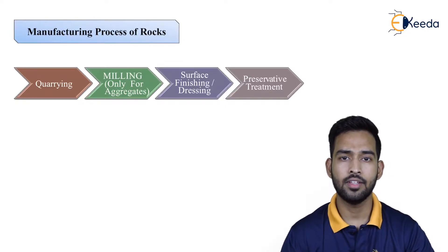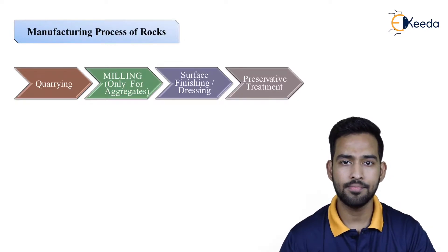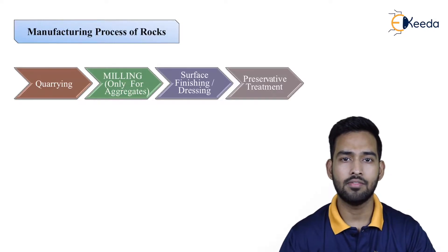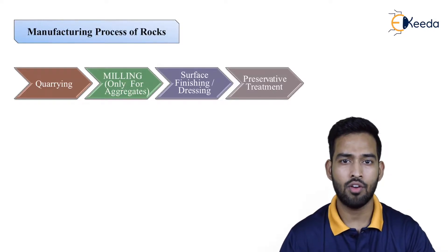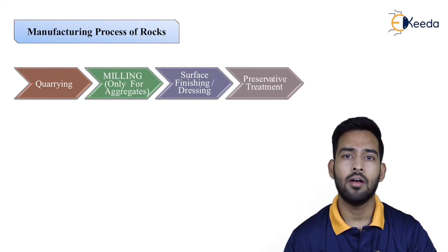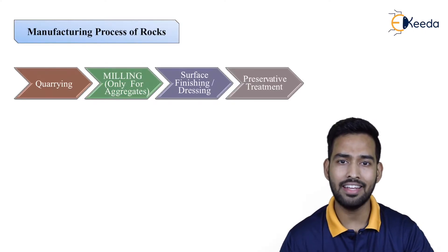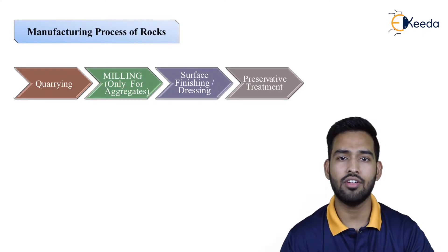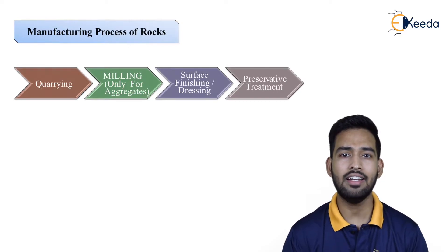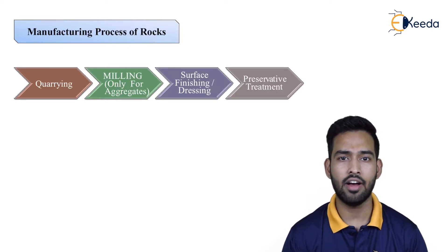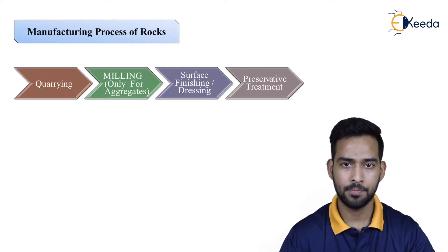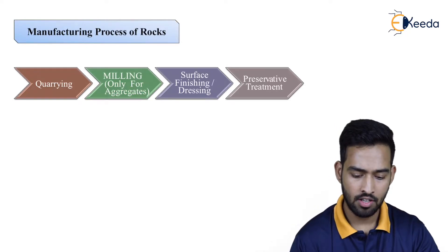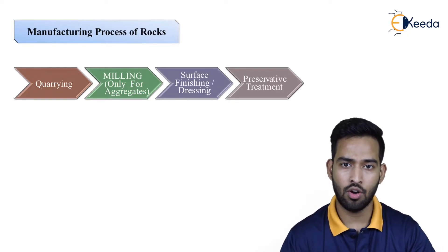As we know, in nature rocks are available in mountains or hilly regions, from which we have to blast them — we have to go for mining. After which we have to grind them in the required desired size and shape. So the actual process of manufacturing of rocks includes 4 stages.